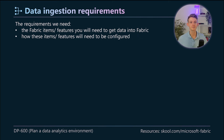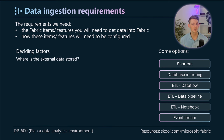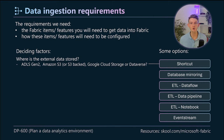For data ingestion requirements, we need to know what Fabric items and features are needed to get data into Fabric and how to configure them. Some options — not an exhaustive list — include the shortcut, database mirroring, ETL via data flow, ETL via data pipeline and notebook, and the event stream. The main deciding factor is where the external data is stored. If it's in ADLS Gen 2, Amazon S3, S3-compatible storage like Cloudflare, Google Cloud Storage, or the Dataverse, then a shortcut into Fabric is available. If Azure SQL, Azure Cosmos DB, or Snowflake is mentioned, you should immediately think about database mirroring to create a live link.